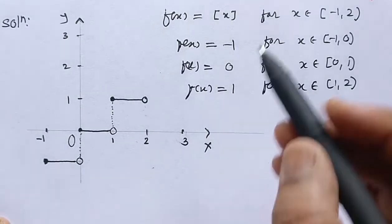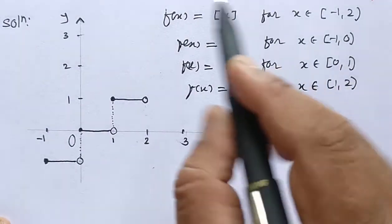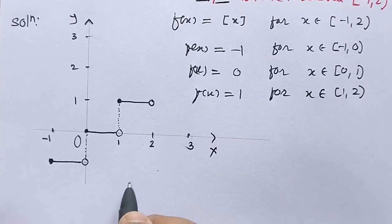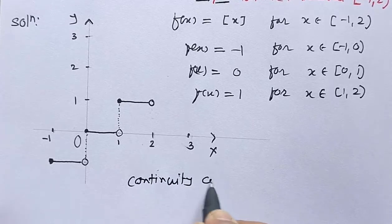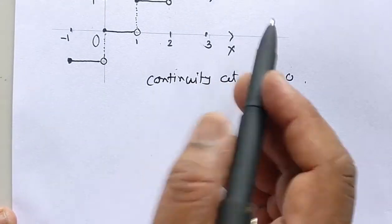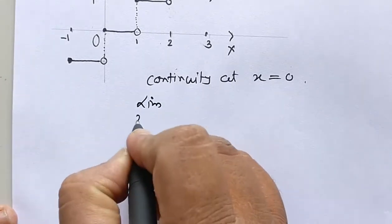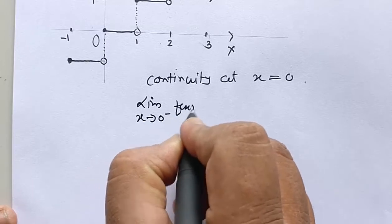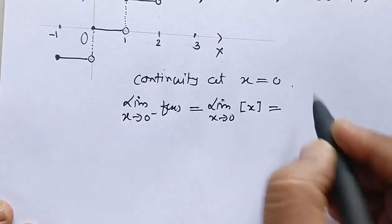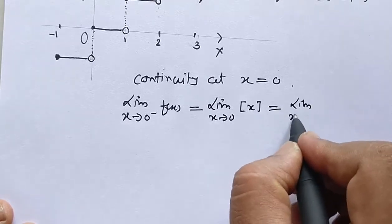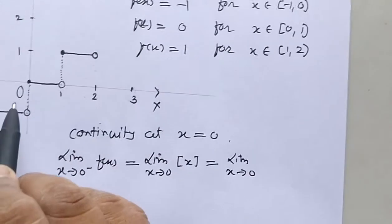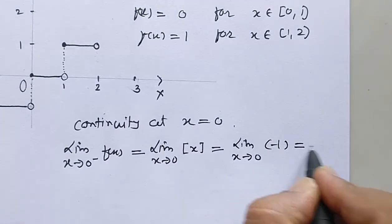We shall check the continuity of the function at x equal to 0 and at x equal to 1. For continuity at x equal to 0, we take the left-hand limit and the right-hand limit. The left-hand limit as x tends to 0 negative: since x is approaching 0 from the left, we are in the interval minus 1 to 0, where the step function equals minus 1. So the left-hand limit is minus 1.